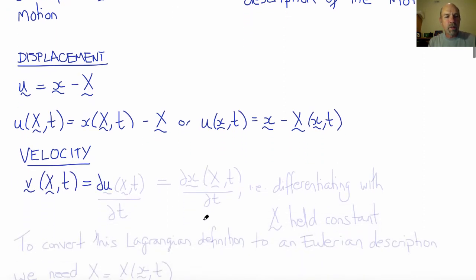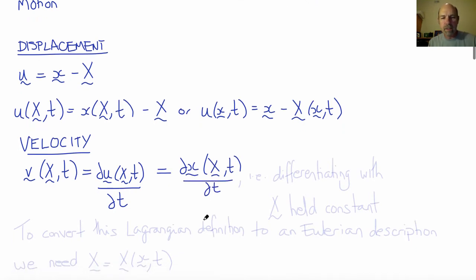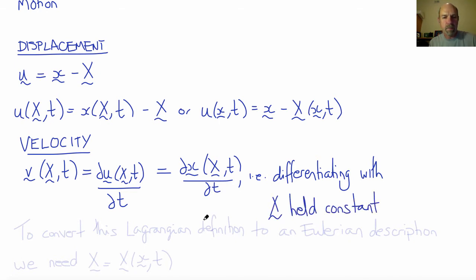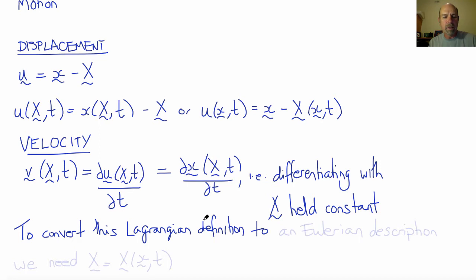Similarly, velocity is the time derivative of U with respect to t. Since U is little x minus big X, and big X is constant with t, this is the same as ∂x/∂t — the derivative of little x with respect to t holding big X constant. This is a Lagrangian definition of velocity. To convert a Lagrangian definition into an Eulerian or spatial definition, we would need to know big X as a function of little x and t.